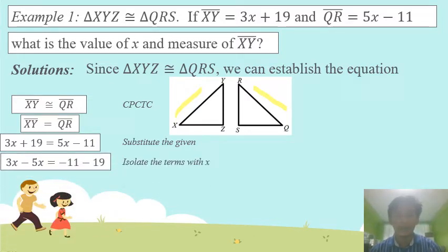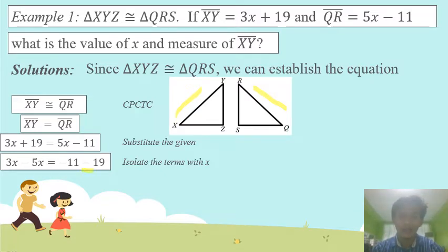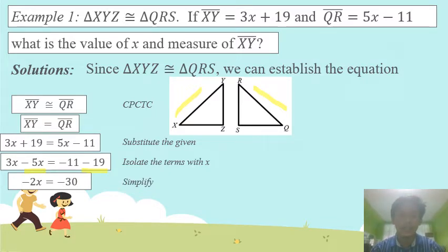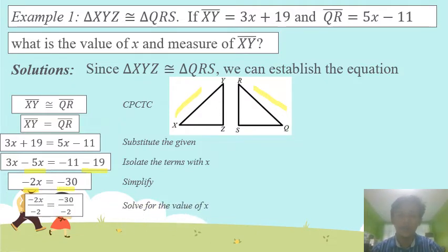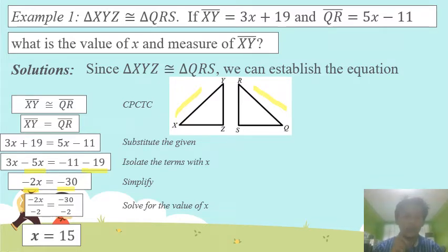Then, isolate the terms with X. We need to transpose 5X to the other side and 19 to the other side also. From positive 19, it will turn to minus 19. From positive 5X, it will turn to negative 5X. Then we simplify: 3X minus 5X gives negative 2X, and negative 11 minus 19 gives negative 30. The value of X is 15, because negative 30 divided by negative 2 equals positive 15. We divide both sides by negative 2 so that X will remain.